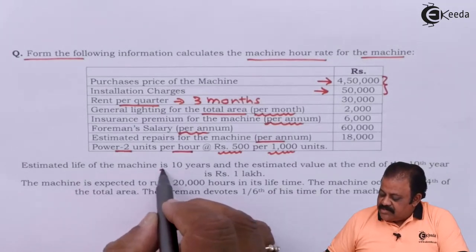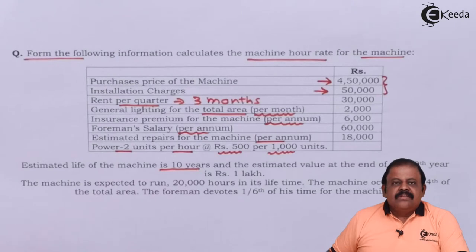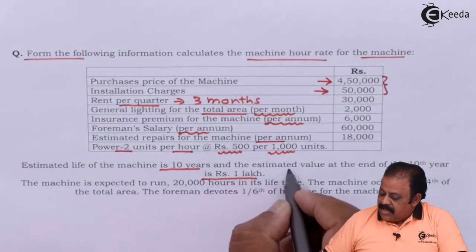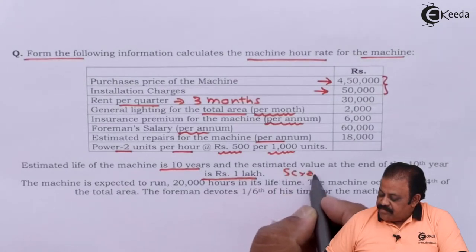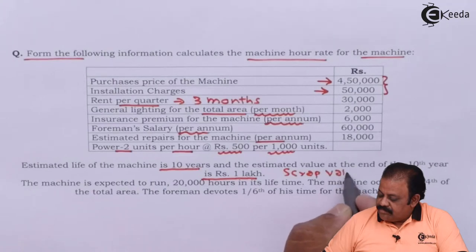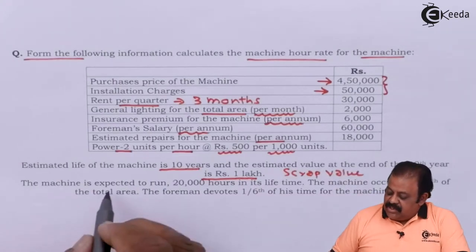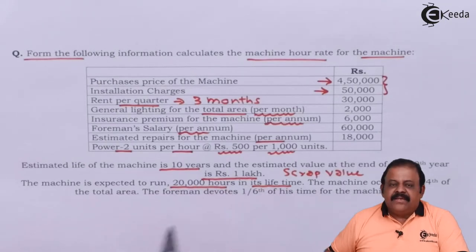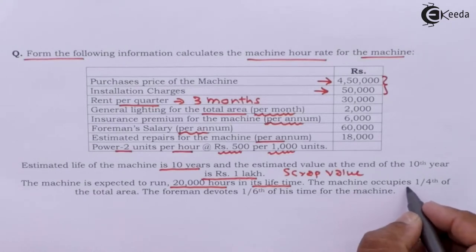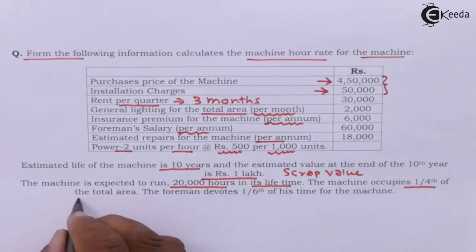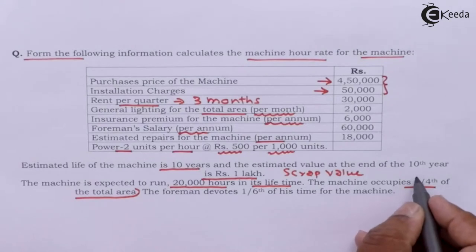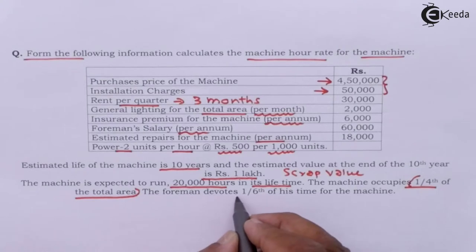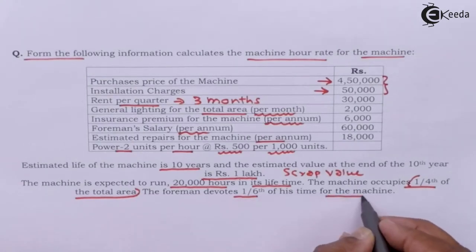Estimated life of machine is 10 years and the estimated scrap value at the end of the 10th year is Rs. 1,00,000. The machine is expected to run 20,000 hours in its lifetime. The machine occupies one fourth of the total area. The foreman devotes one sixth of his time for the machine.